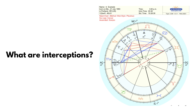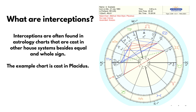So what are interceptions? Interceptions are often found in astrology charts that are cast in house systems besides equal or whole sign. You'll never find an interception if you're using whole sign charts. This chart is cast in Placidus, but you'd also find interceptions in Koch or Regiomontanus and many other house systems. I use Placidus because when I was a young student in the 90s, my instructor had me investigate about 14 or 15 different house systems, and I use the one I found most accurate in both natal and predictive charts, including mundane astrology.